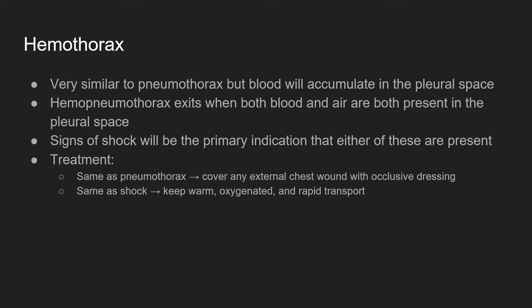A hemothorax is very similar in pathophysiology to a pneumothorax, with the key difference being 'hemo' — meaning blood — so there is blood filling up between the pleural linings, the visceral and the parietal. You could also have blood and air together, which would be a hemopneumothorax. Both can be life-threatening because not only do we have issues of air pressure causing intrathoracic pressure changes, but also a loss of blood. Our treatment is the same: any external chest wound we can find, use an occlusive dressing, keep them warm, keep them oxygenated, treat for shock, and rapid transport to our trauma destination.